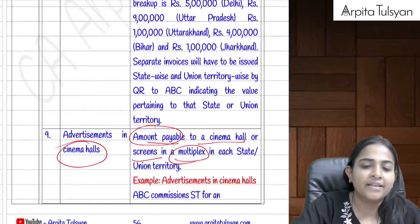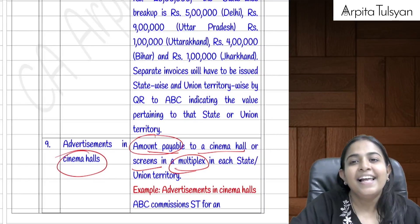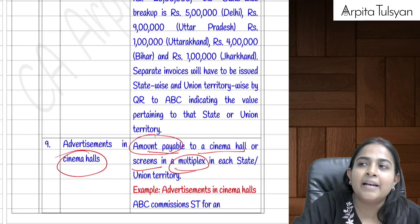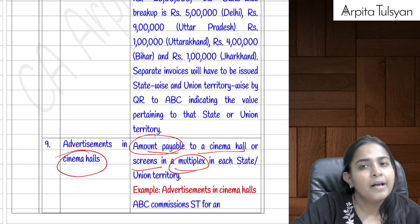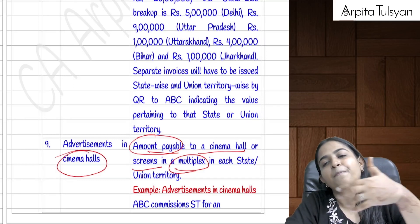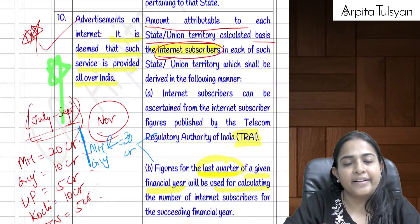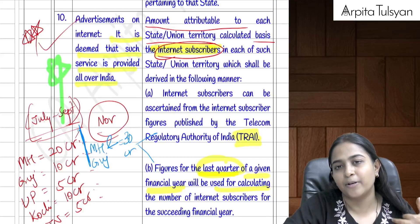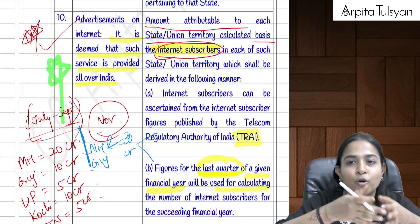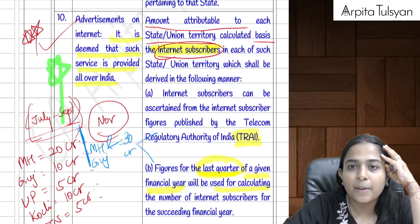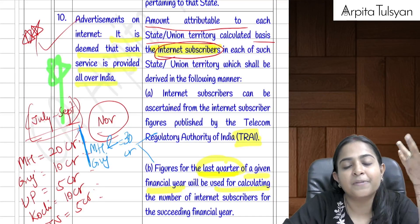Note the distinction: for television, the viewer figures are taken from the last week of the last quarter, whereas for internet, the total number of subscribers for the last quarter is used. For SMS advertisements, the split is in the ratio of the number of telecom subscribers in each state as per TRAI, again using last quarter figures, with census population ratio applied when TRAI gives combined regional data.